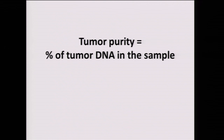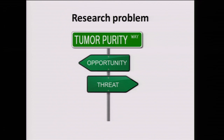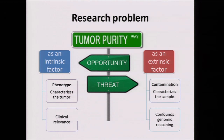We wanted to start with a very simple problem: tumor purity, which is the percentage of tumor DNA in the sample. This was published a couple of months ago. When we started thinking about this problem, we understood that there are both opportunities and threats in tumor purity. It's an opportunity if you look at purity as an intrinsic factor — it's a phenotype that characterizes the tumor and might have clinical relevance. But on the other side, it's a threat if seen as contamination of the sample, which will confound our genomic reasoning. The first part of my talk will be about the opportunity; the second will be on the threat, which I hope to show is also an opportunity.